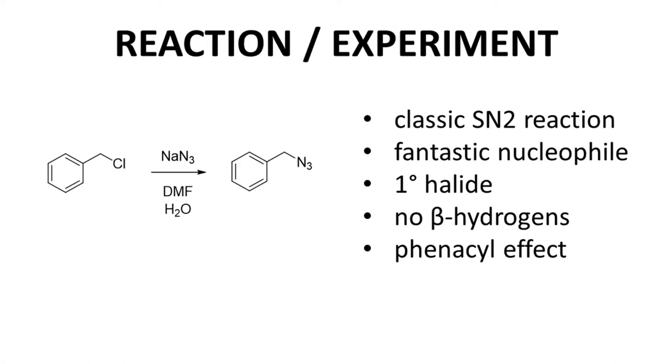Here is the reaction for this video. We are reacting benzyl chloride on the left with sodium azide to form benzyl azide as the product. This is an incredibly good SN2 reaction. The nucleophile, azide ion, is truly one of the great SN2 nucleophiles. The halide is very unhindered, a primary halide. Furthermore, the halide has no beta hydrogens, so there is absolutely no concern of a competing E2 reaction. Finally, the reactivity of the alkyl halide is enhanced through the phenacyl effect.